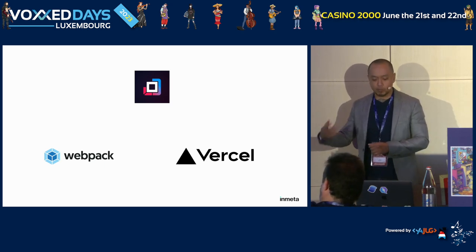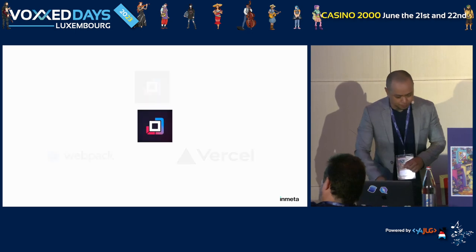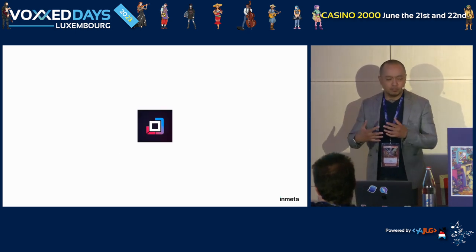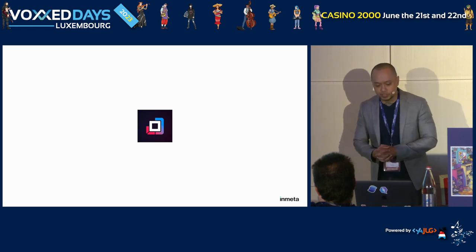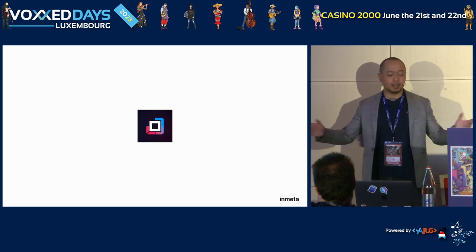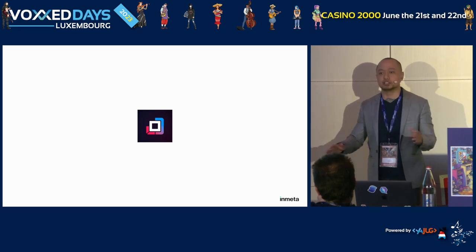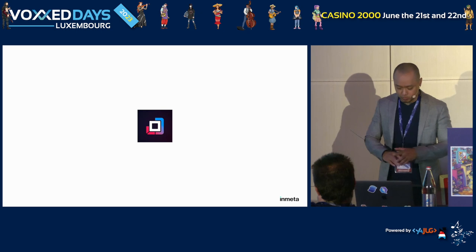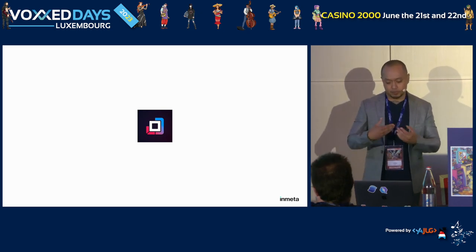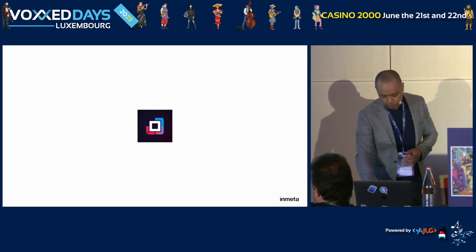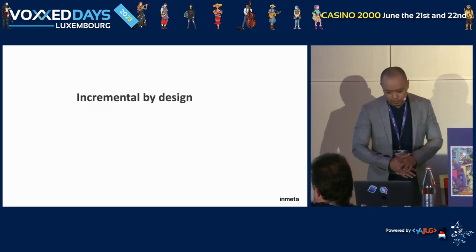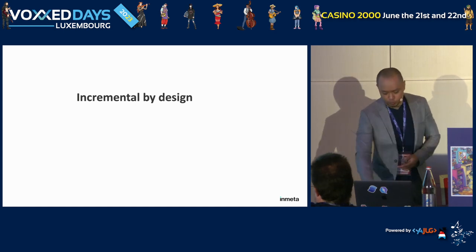Turbopack is written in Rust by the creators of Webpack and Next.js at Vercel. Turbopack delivers swift and versatile development experiences for applications of any scale — it doesn't matter how big the application or codebase is — thanks to its progressive behavior and adjustable packaging approaches. But why Turbopack?